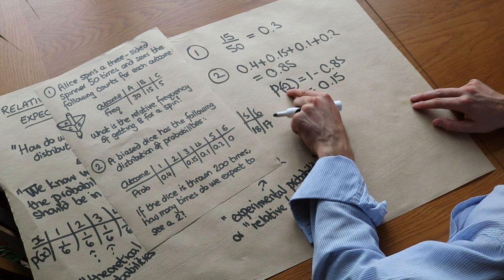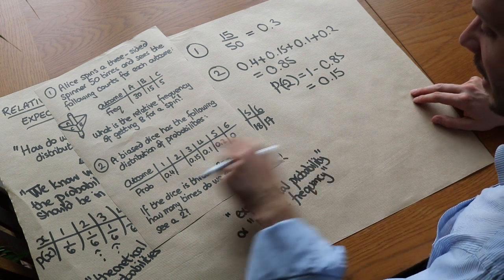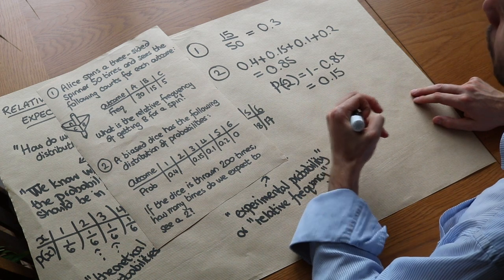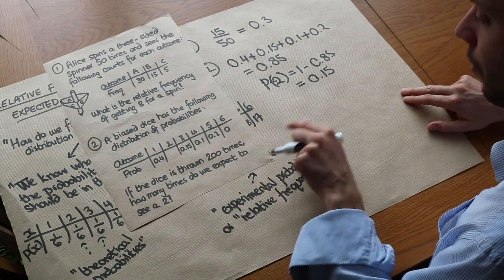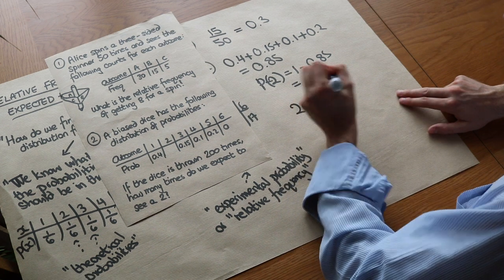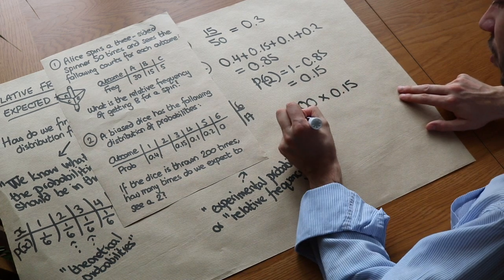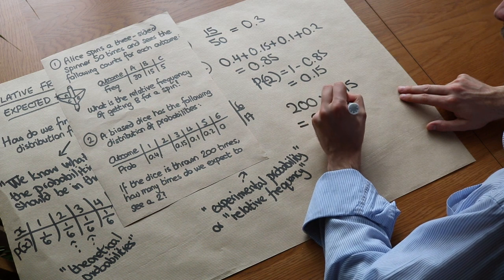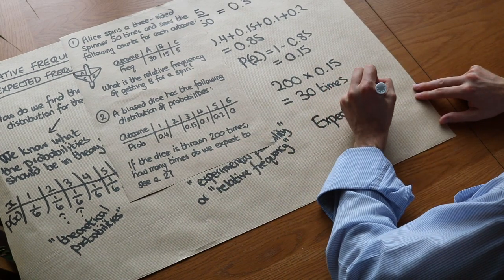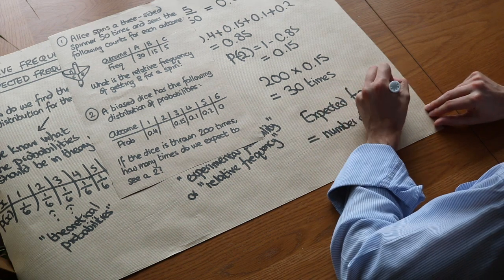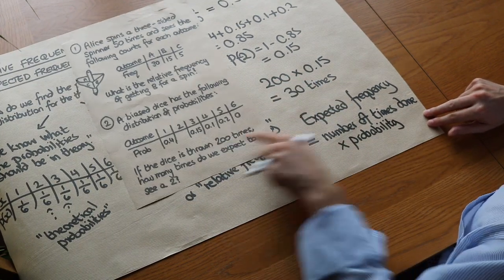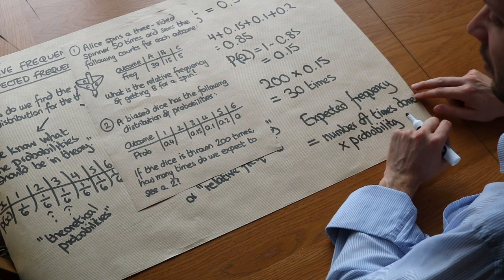If the probability of getting a 2 is 0.15, another way of saying that is on average we expect to see a 2 about 15% of the time. So all we need to do is find 15% of 200, or equivalently take the number of throws — 200 — and multiply by the probability 0.15, giving us 30. So we expect to see a 2 thirty times. The formula is: expected frequency equals the number of trials times the probability of that outcome.